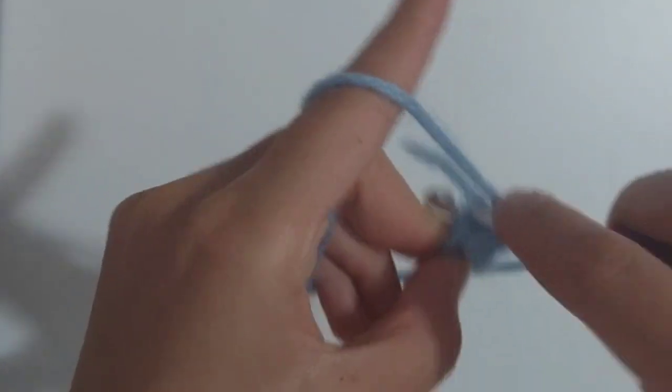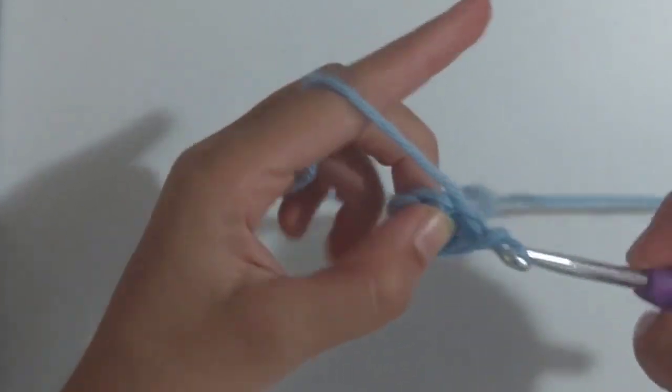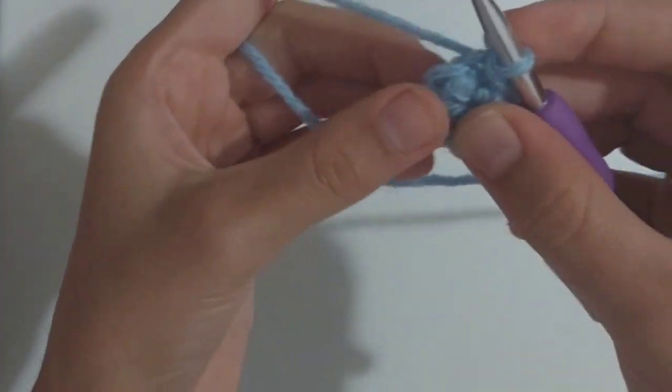So you're going to insert your hook, yarn over, and then pull through both. Now it looks like a circle.